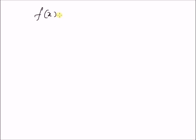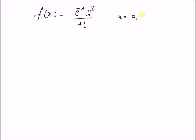Given the Poisson distribution f of x is equal to e power minus lambda, lambda power x divided by x factorial, where x is a whole number 0, 1, 2 and so on.